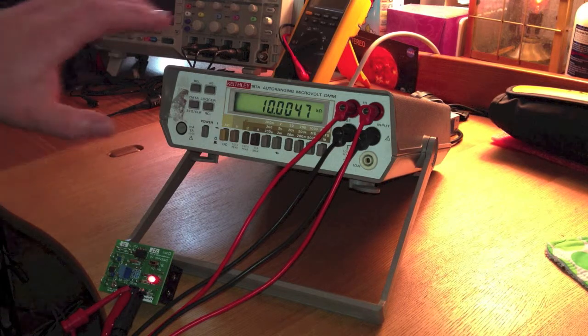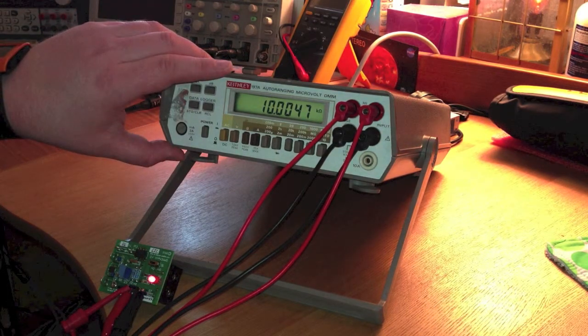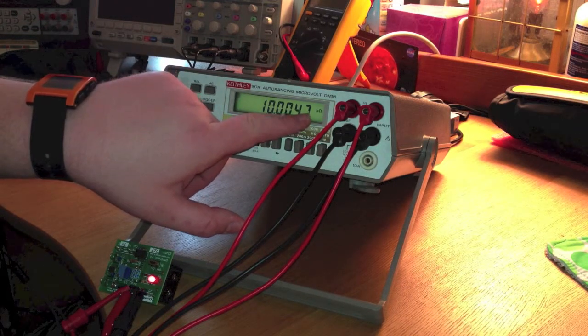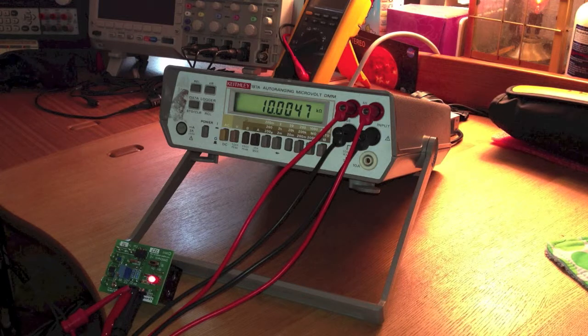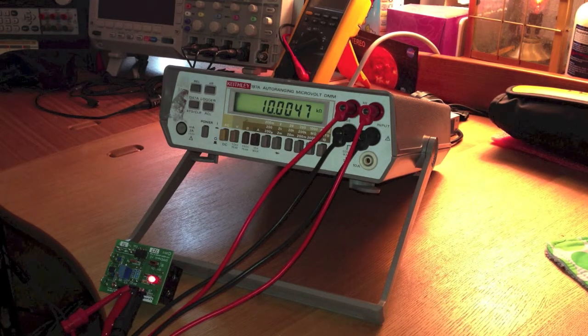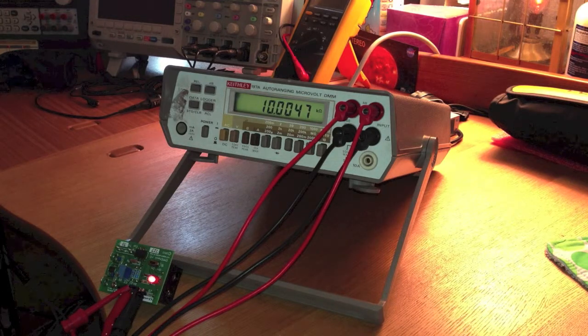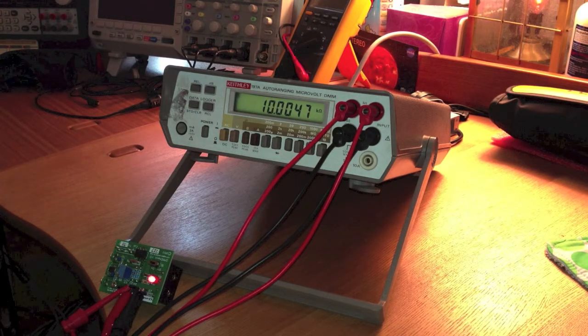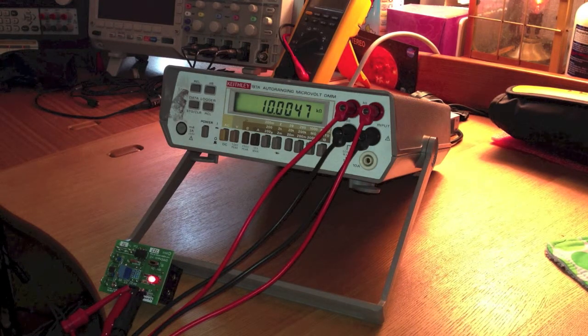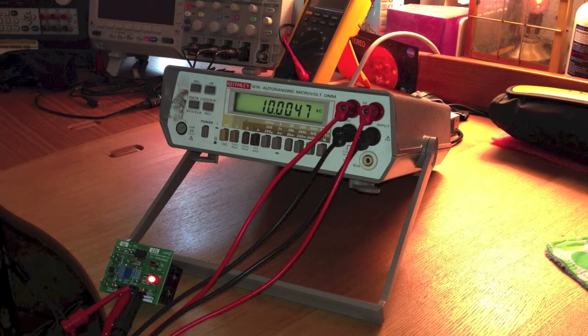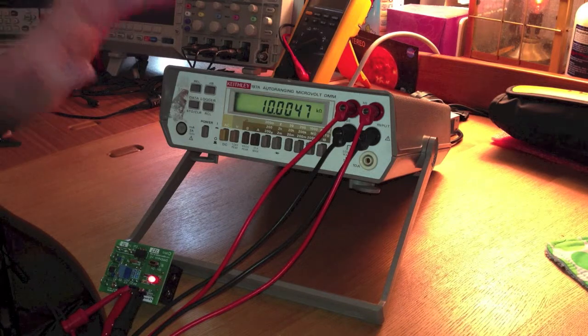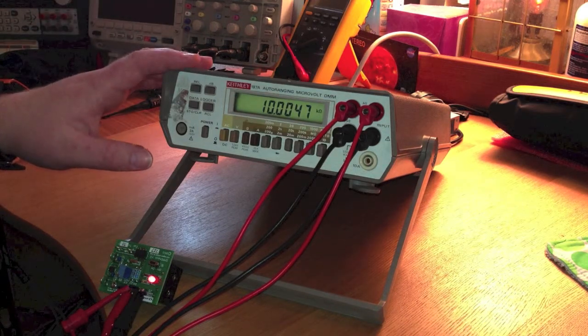Out of the box, this unit is three counts off. On this range, this should be 10.0050K and we're at 10.0047K. So I think that's acceptable given the actual stated accuracy of this unit.